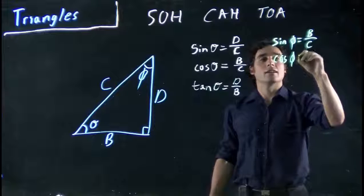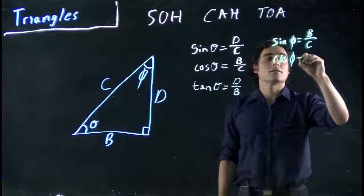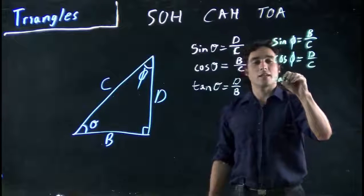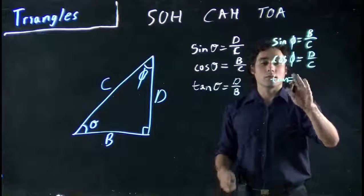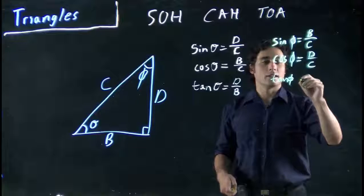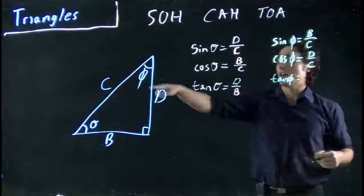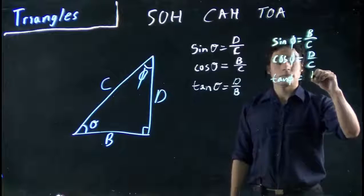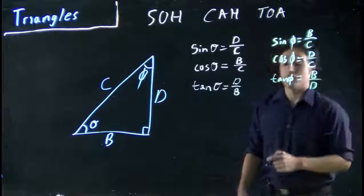Cos phi, we can think again, adjacent, D over C our hypotenuse. Finally, tan is simply tan of phi is going to equal our opposite, B opposite of the angle, B over D our adjacent.